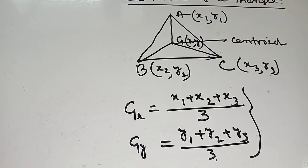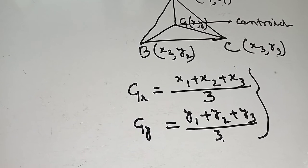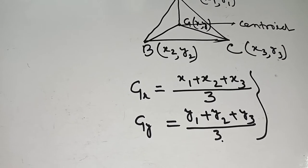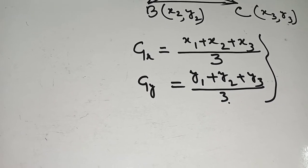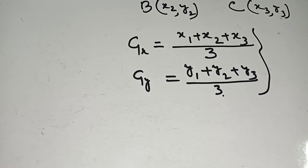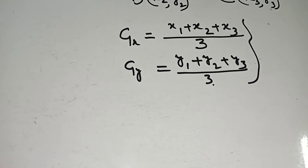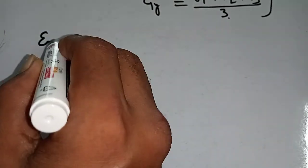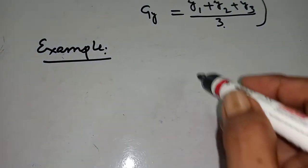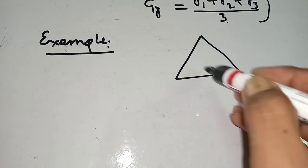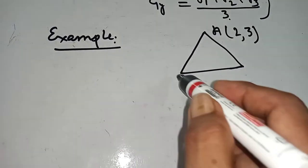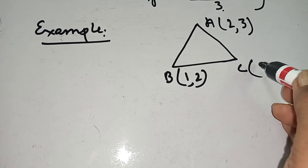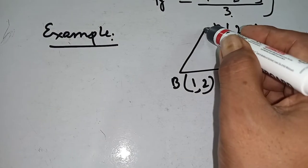To summarize: if the coordinate of A is (x1, y1), coordinate of B is (x2, y2), and coordinate of C is (x3, y3), then Gx = (x1 + x2 + x3) / 3 and Gy = (y1 + y2 + y3) / 3. Now let's look at an example: suppose A is (2, 3), B is (1, 2), and C is (5, 1). Find the centroid.